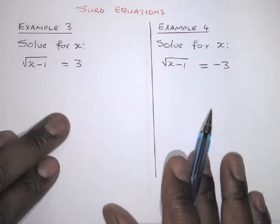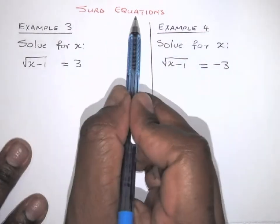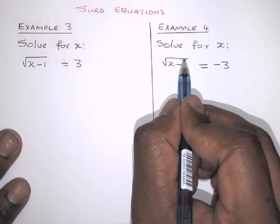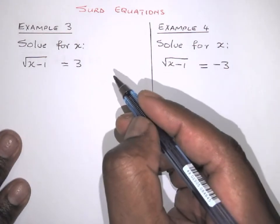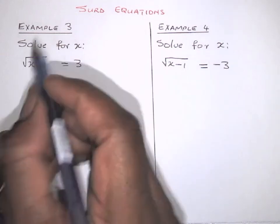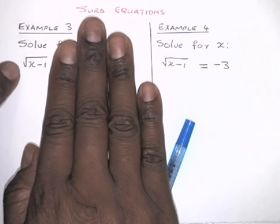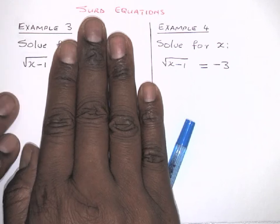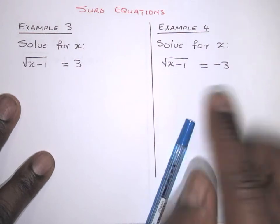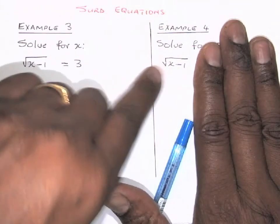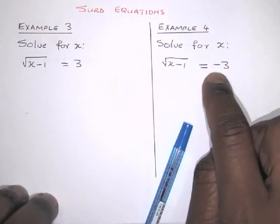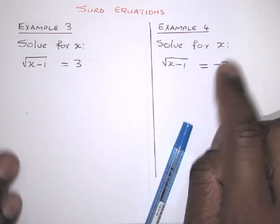Now let's look at surd equations — you'll see them with square root signs. By definition, the square root of a number is always positive. So if an equation states that a square root equals a negative number, it cannot be solved — there is no answer.